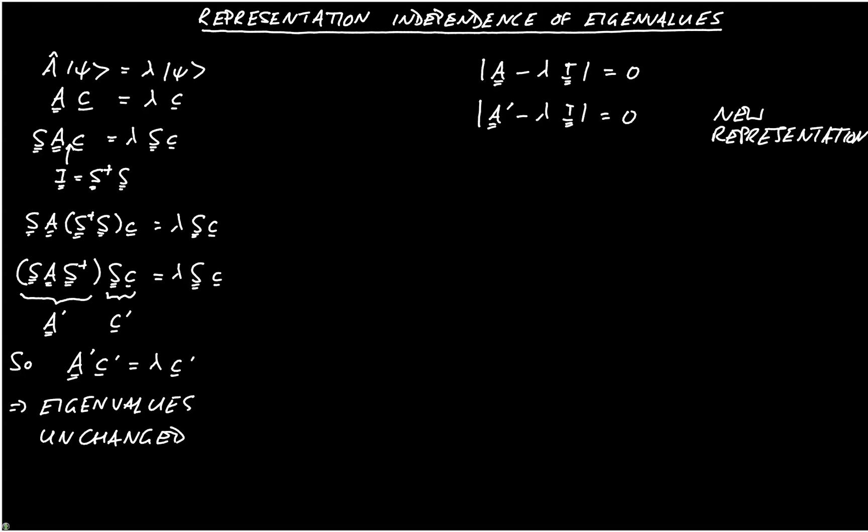So we need to substitute in for A prime, and so we're going to do S A S dagger minus lambda, and we'll now put in S I S dagger is equal to zero.